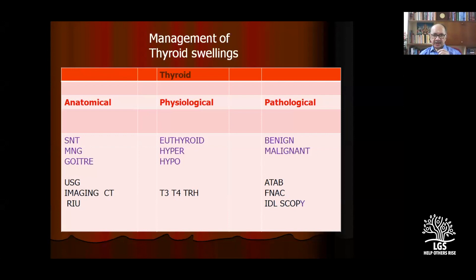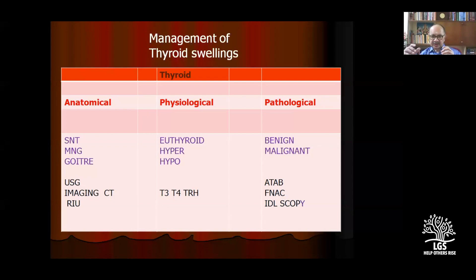Management of thyroid depends on three important factors. For anatomical aspects, we investigate solitary nodule thyroid, MNGs, and goiters using ultrasound, CT imaging, and radioimmunoassays. For physiological thyroid assessment — euthyroid and hyperthyroid — we need T3, T4, and TRH. For pathological diagnosis — benign and malignant swellings — we use anti-thyroid antibodies and FNAC. Ultrasound and FNAC are the key factors in diagnosis of thyroid swellings.